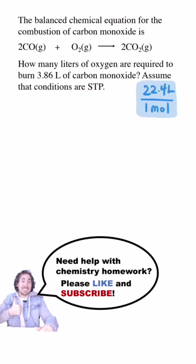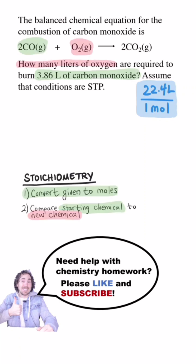We can use this relationship as a conversion factor to solve a stoichiometry problem like this one. We first convert the given quantity to moles, then we compare the starting chemical to the other chemical we want to know about with the coefficients in the equation, then we convert to the desired unit.